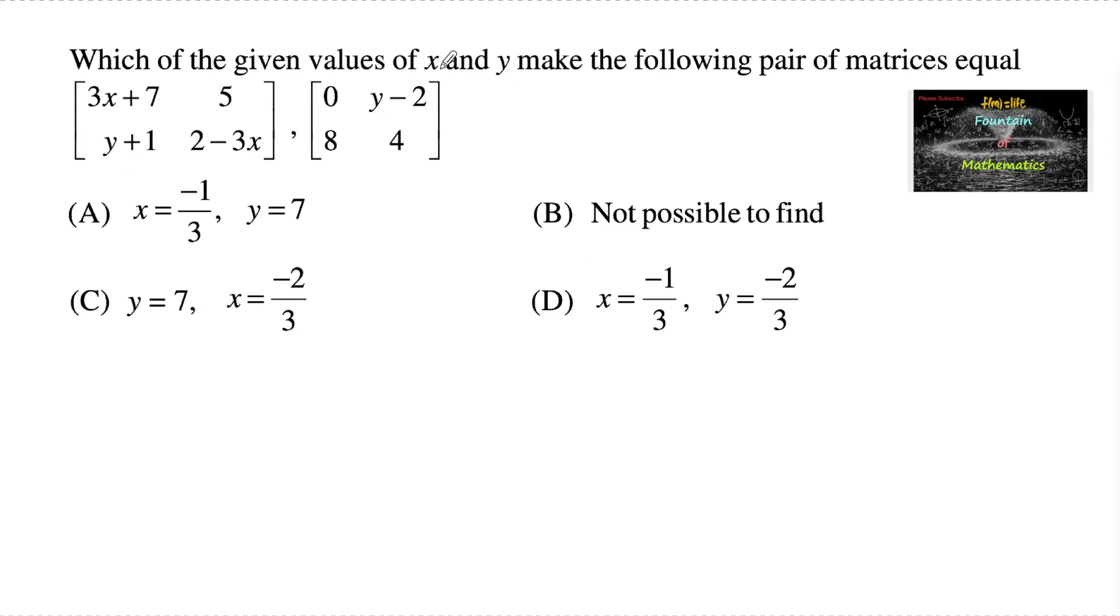Which of the given values of x and y make the following pair of matrices equal? Here the given matrices are: 3x plus 7, 5,